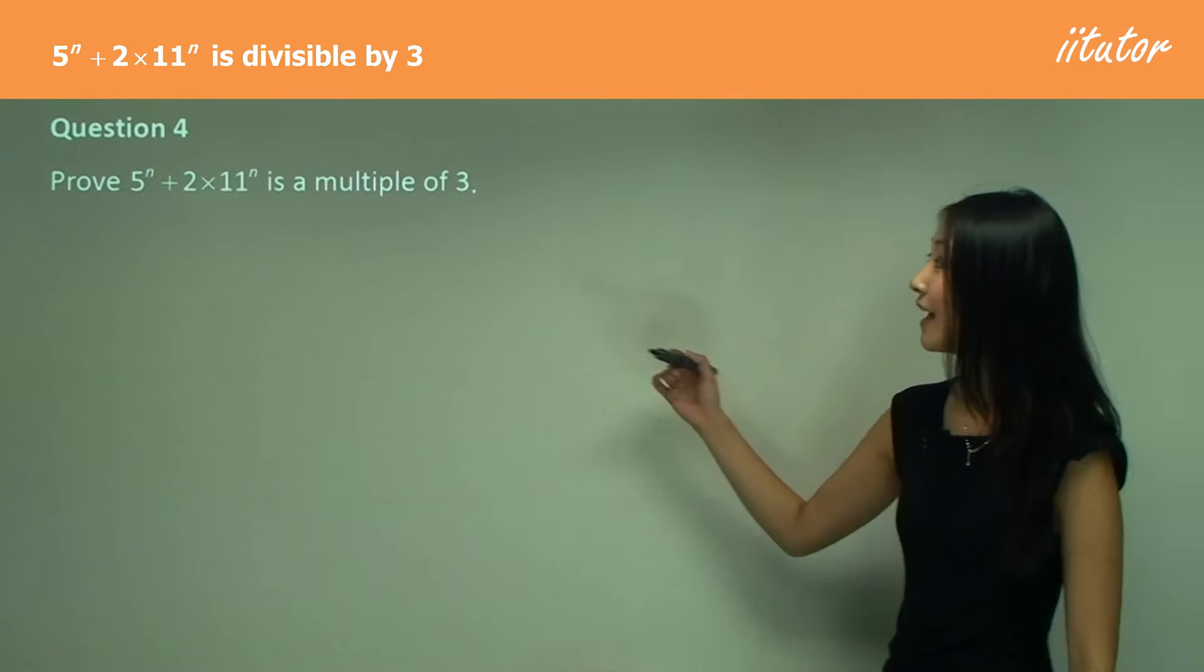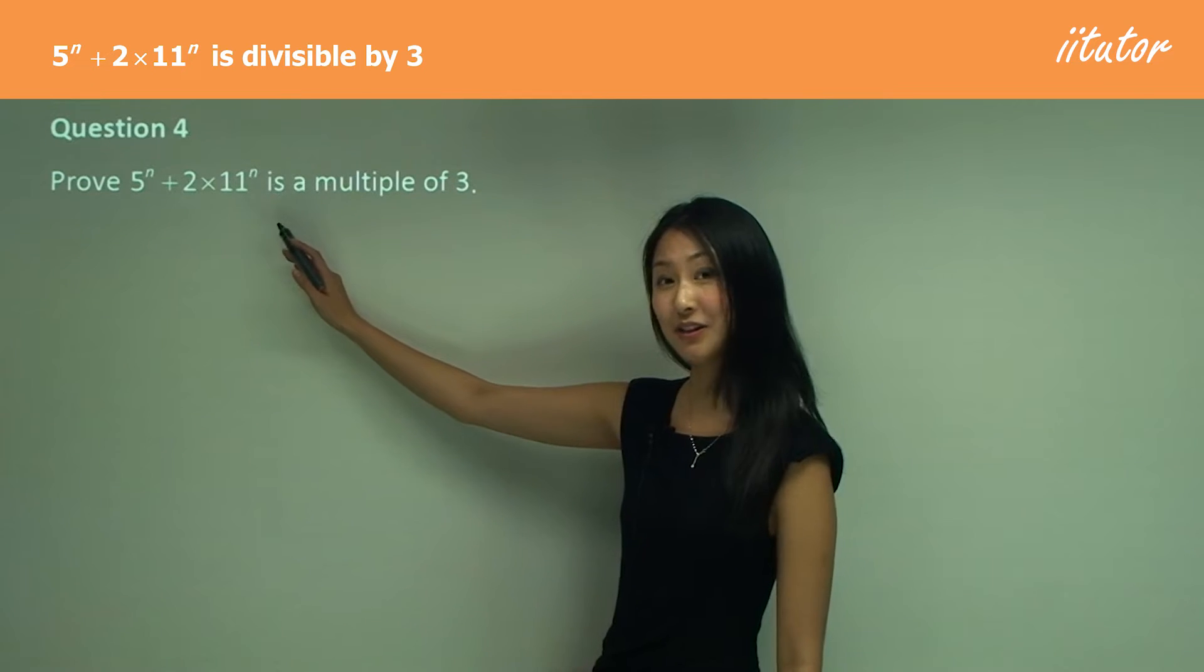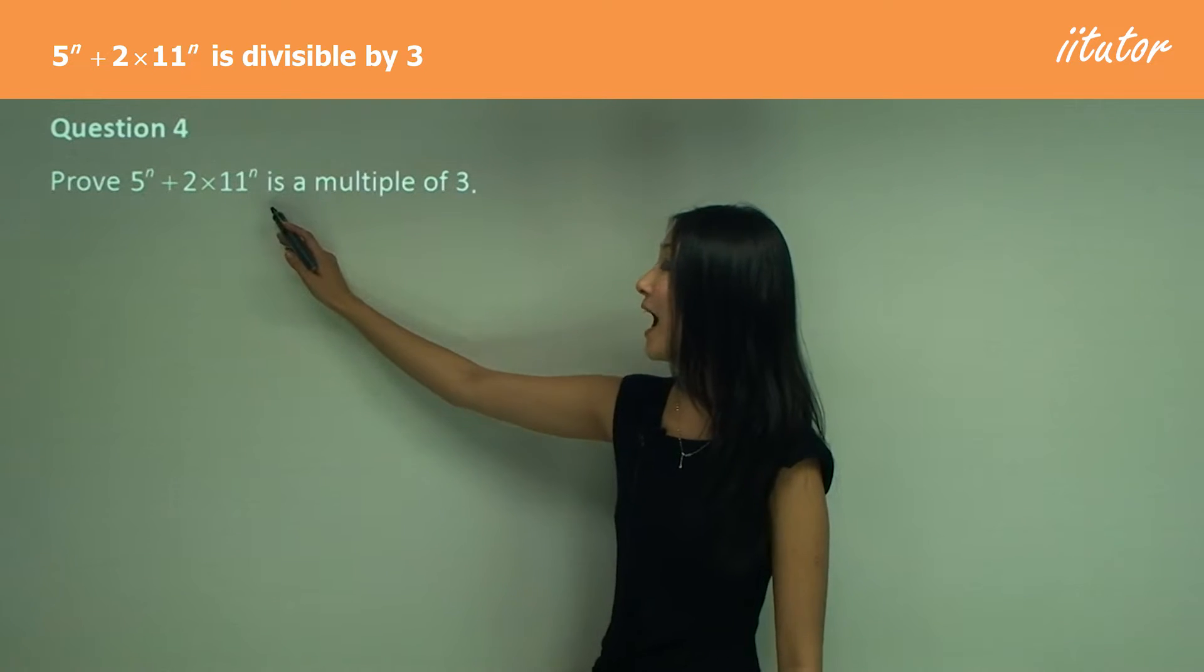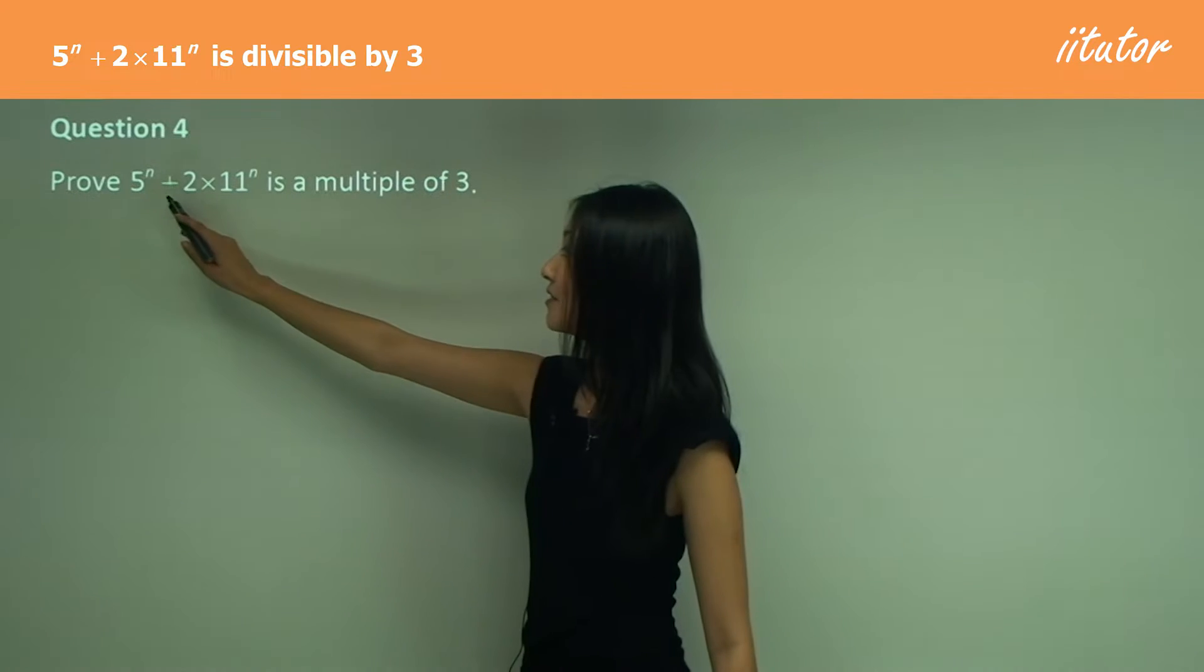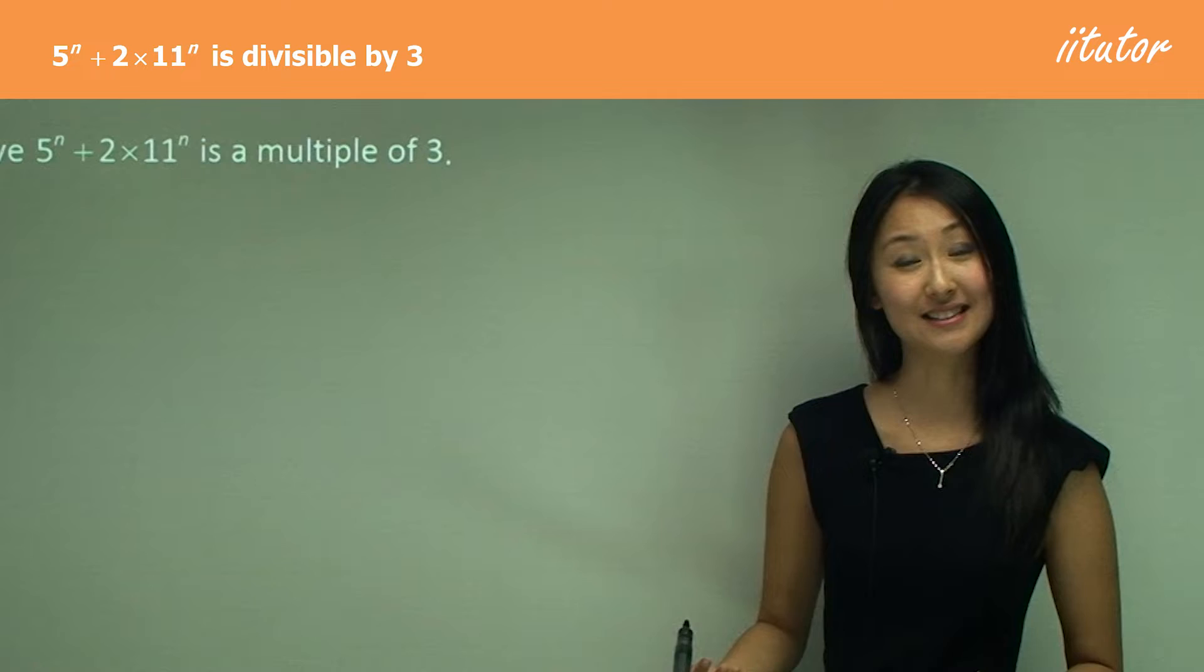We want to prove that five to the power of n plus two times 11 to the power of n is a multiple of three. So you can see that I have two values, five and 11, both have indices.